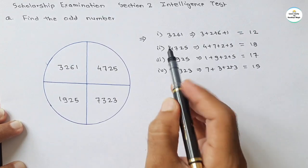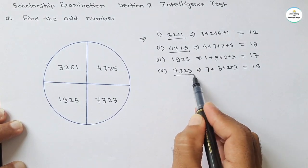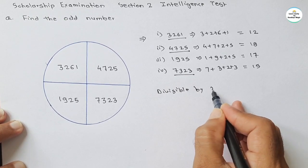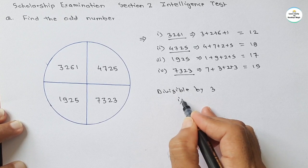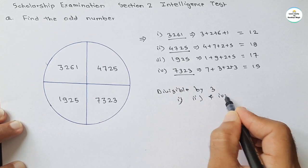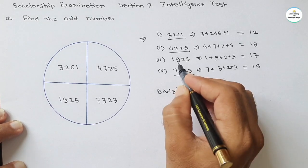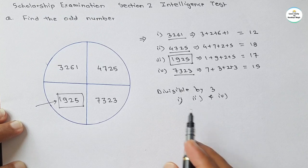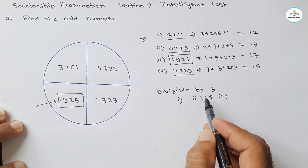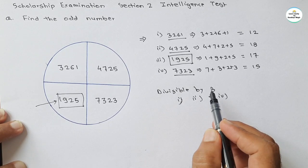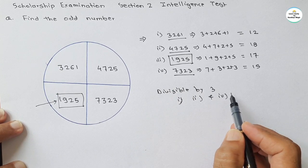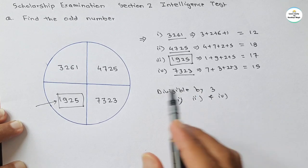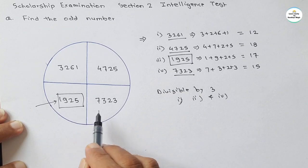Looking at the digit sums — 12, 18, 17, 15 — the first, second, and fourth numbers are divisible by 3. Only 1925 with digit sum 17 is not divisible by 3. So we can say 1925 is the odd number. Here we have used the divisibility rule for 3. If you want to see the divisibility rule for different prime numbers, there is a dedicated video for this — do watch that video, it is very useful while solving such sums.